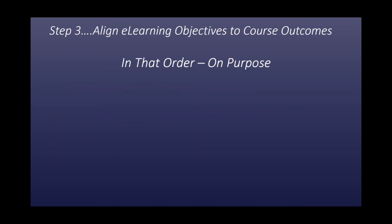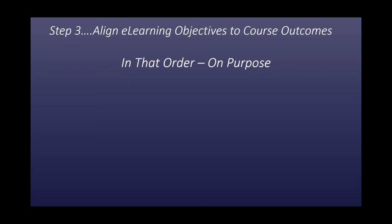Step three is to align the e-learning objectives to course outcomes. This is the most important part. And we say align e-learning objectives to course outcomes in that order and on purpose. Most folks will ask you to do the opposite — to look at the e-learning objectives and then change your course outcomes to match them. That's not what we do. Your course outcomes have been studied, they've been implemented, they work for you, they work for your students, they work for your communities. Our job is to determine how we take your course outcomes and align our e-learning objectives to them. We do the work, not you.